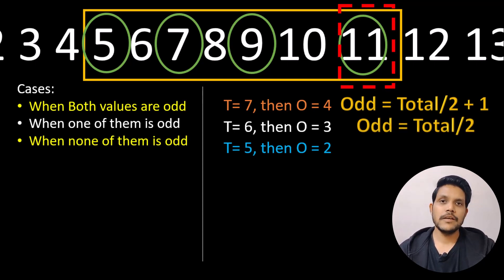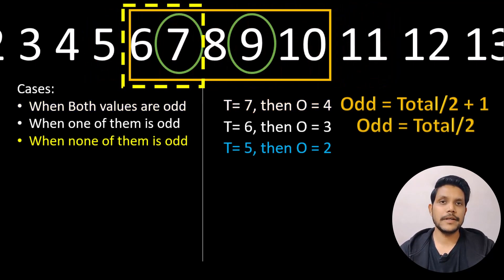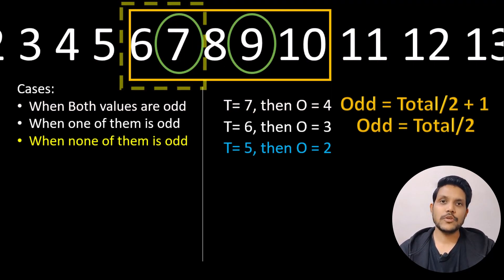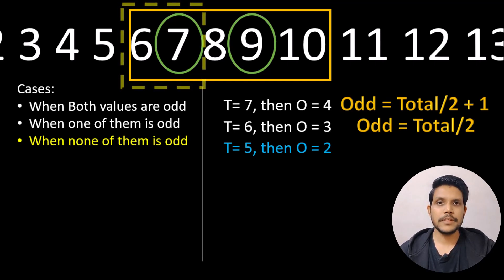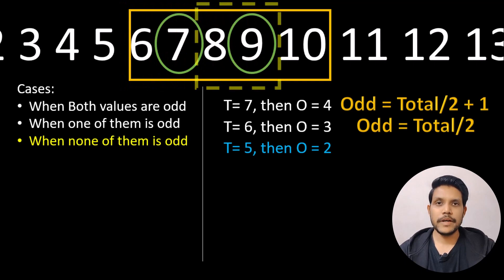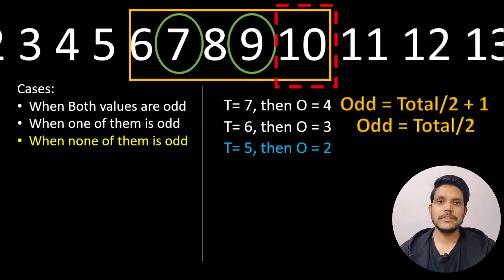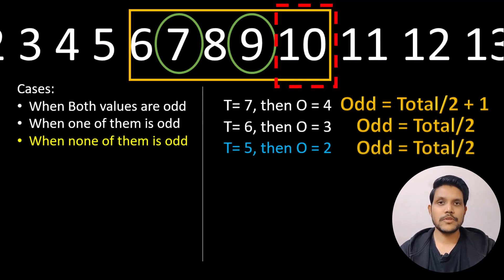In the third case where none of the two values is odd, the total number of values is also odd. We again take a window of size two and move it, but at the end we come across a single variable which is not an odd value, so we don't add it. The total number of odd values equals total divided by two.